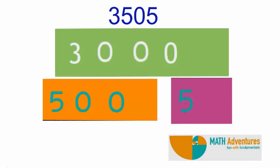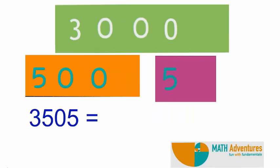Now separate the cards. What do you see? A green card with the number 3,000, an orange card with the number 500, a pink card with the number 5. So can I say the expanded form of 3,505 is nothing but 3,000 plus 500 plus 0 plus 5?